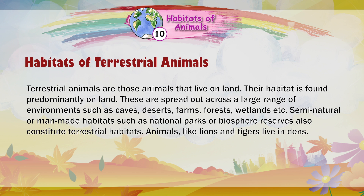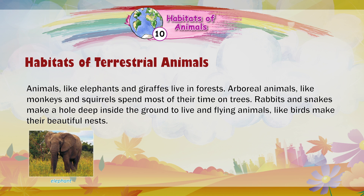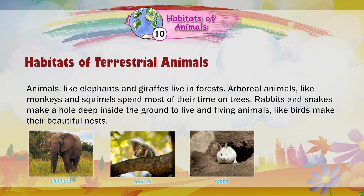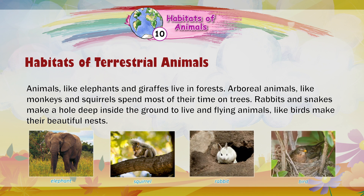Animals like lions and tigers live in dens. Animals like elephants and giraffes live in forests. Arboreal animals, like monkeys and squirrels, spend most of their time on trees. Rabbits and snakes make a hole deep inside the ground to live, and flying animals like birds make their beautiful nests.